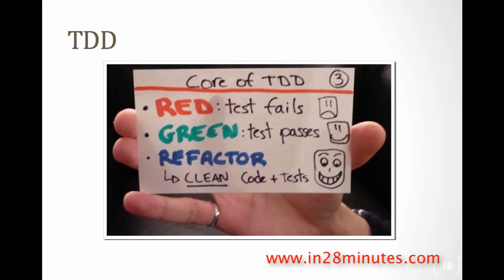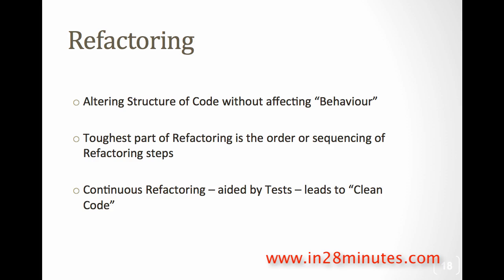Follow test-driven development: red, green, refactor. Write a failing test, write code to make it pass, then refactor to make it clean. Then write another small test, make it pass, refactor and make it good. This is a never-ending cycle — keep doing it. Refactoring is also very important. Code keeps evolving, and refactoring is part of everyday life — not some activity you do at the end of a release. Make sure you are improving your code every day.